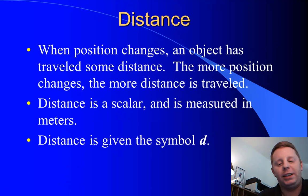When position changes, an object has traveled some distance. The more position changes, the more distance is traveled. Distance is what's known as a scalar quantity. It has a magnitude or size only. Direction doesn't count. It's measured in meters and it's given the symbol D.